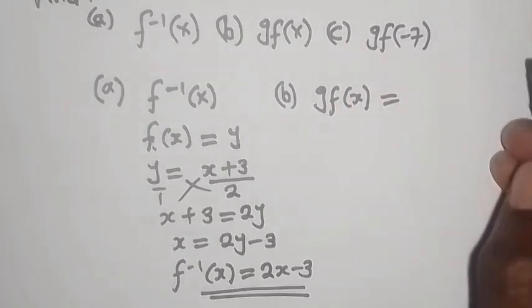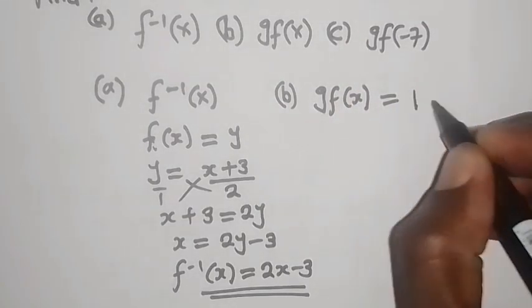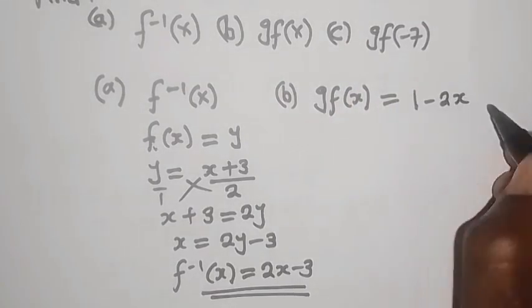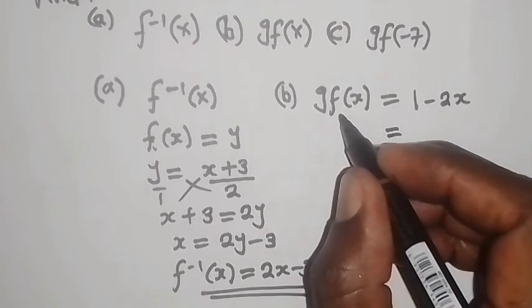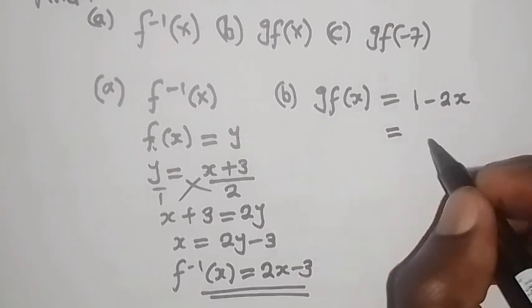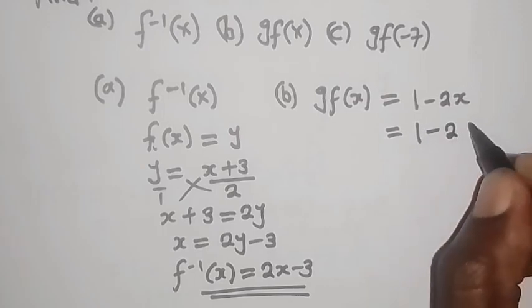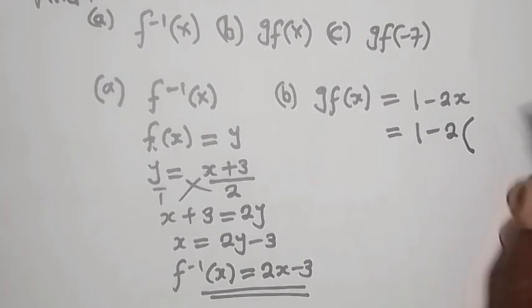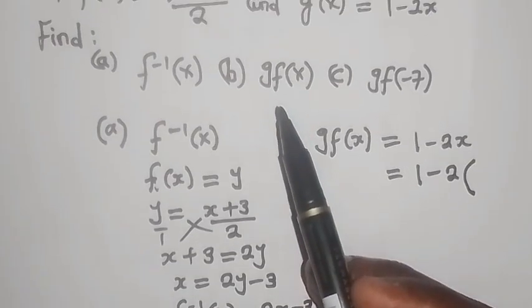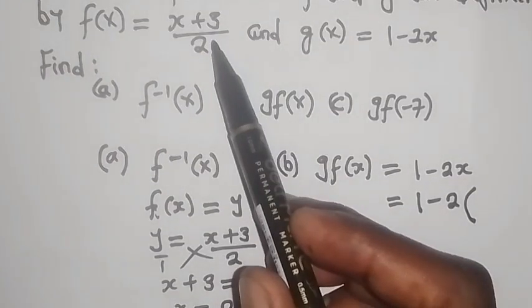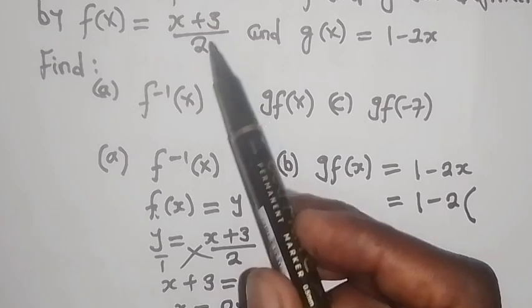So I'm going to say 1 minus 2x. And then now you'll get the inner function, which is f(x). You're going to say 1 minus 2, open bracket, now you put the f. So the function f is which one? This one. x plus 3 over 2.